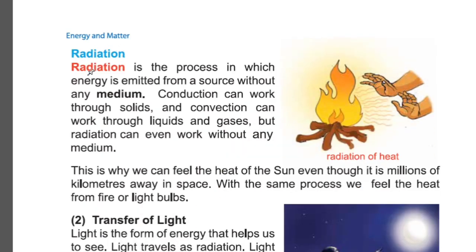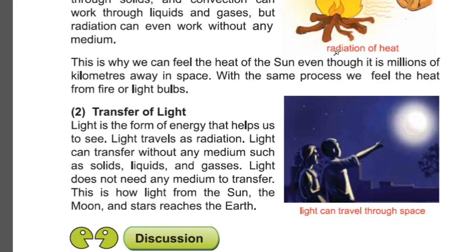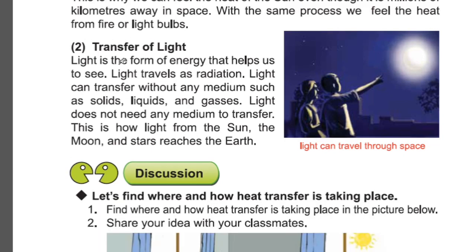Page 36 — Radiation. Radiation is the process in which energy is emitted from a source without any medium. Heat can transfer by this process without any medium — it needs no medium to transfer. Conduction works through solids and convection works through liquids and gases, but radiation can work without any medium. This is why we can feel the heat of the sun even though it is millions of kilometers away in space. With the same process, we feel the heat of fire or light bulbs. Transfer of light — light is a form of energy that helps us to see. Light travels as radiation and can transfer without any medium such as solids, liquids, or gases.